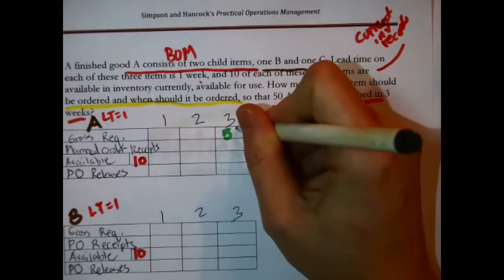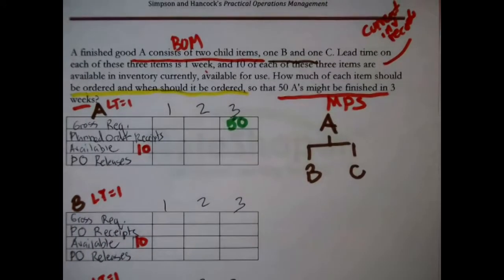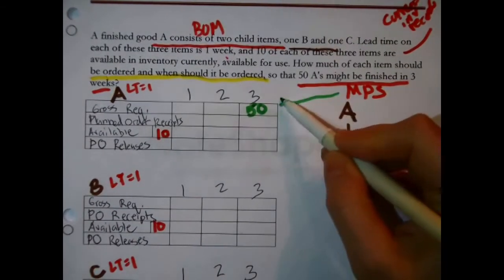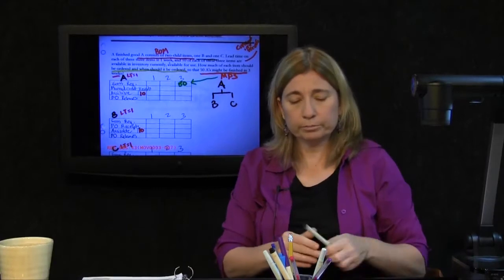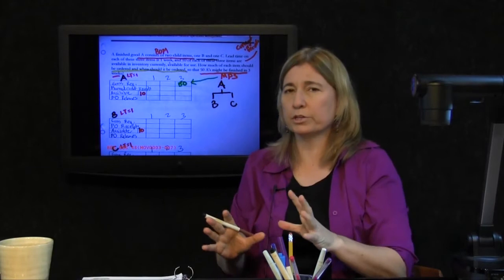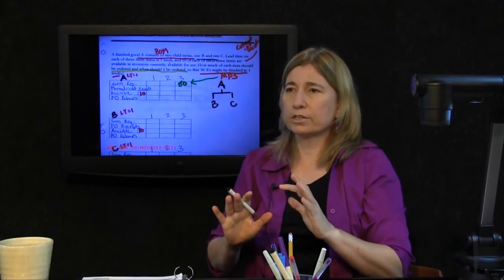Fifty A's should be finished in three weeks. Little note to self. Fifty. Fifty in three weeks. That came from right there. We have completed the step of getting set up. All the information is staged. Next step.